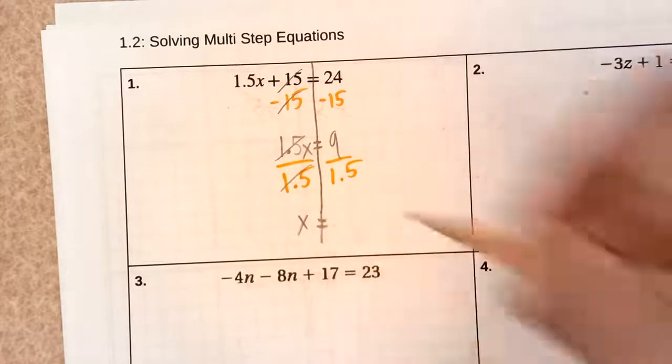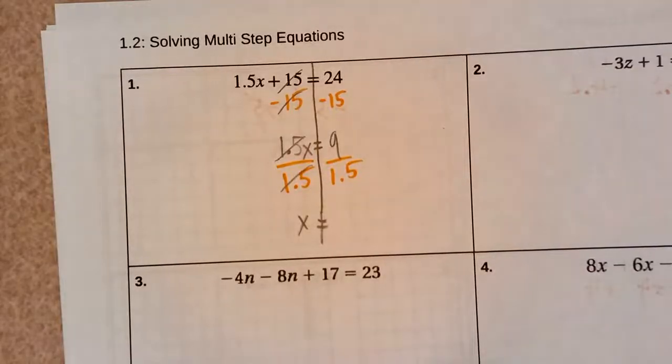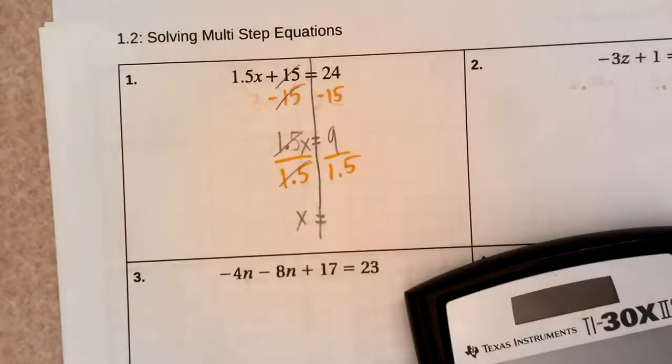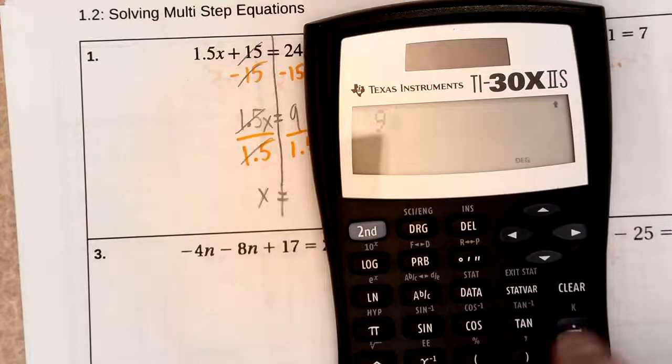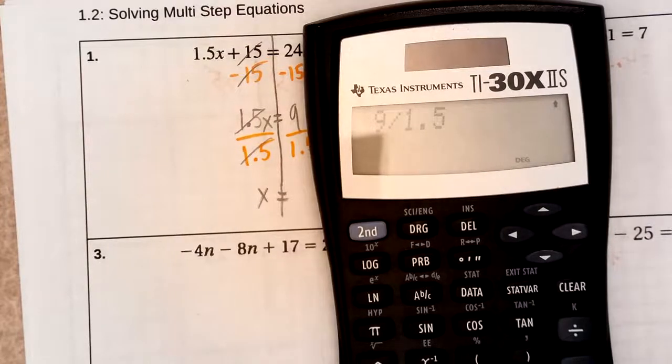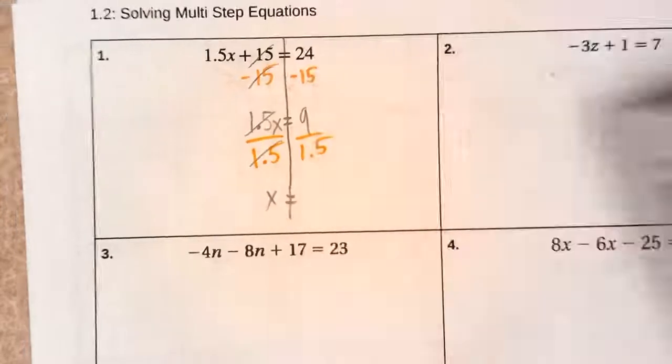On the other side, 9 divided by 1.5. Well, I might just use a calculator, make sure I don't make a mistake. I got 9 divided by 1.5. And we got 6. Final answer.